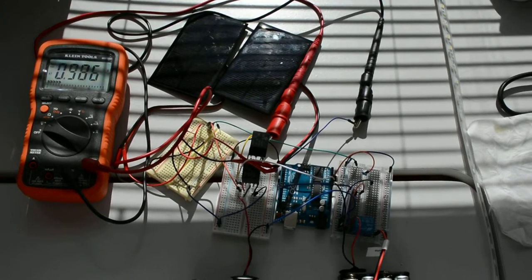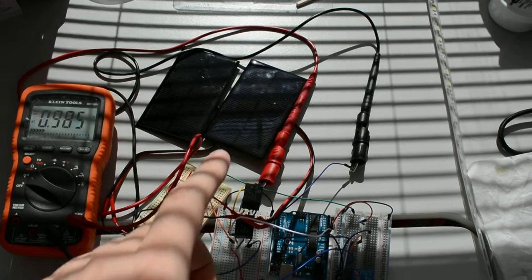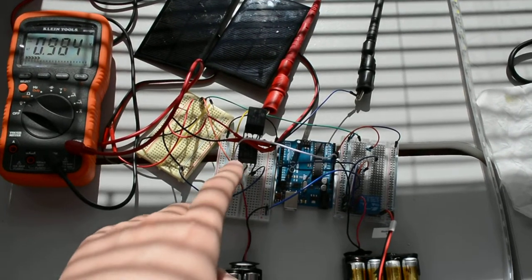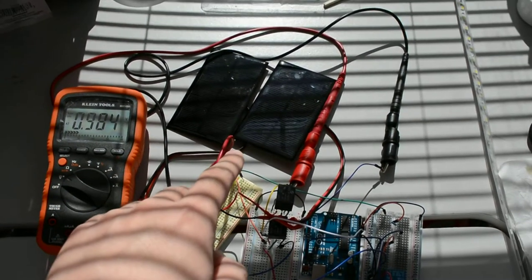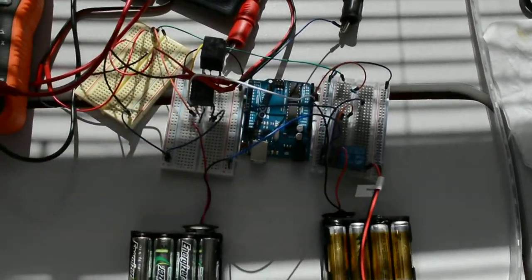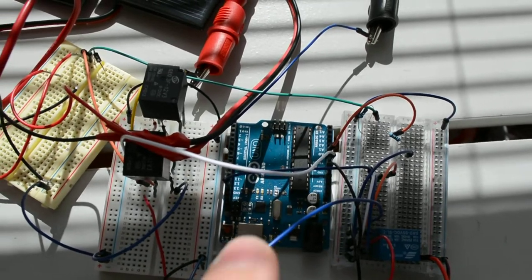Right now it's daytime, so the solar panel is sensing the sunlight and the Arduino is turned off. I set up the relay switch to be turned off when the solar panel senses high voltage. Right now, the Arduino green light is not turned on - the Arduino is off.